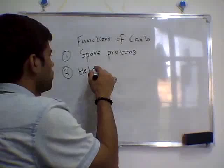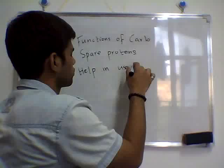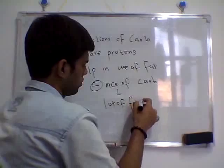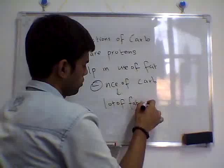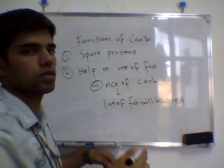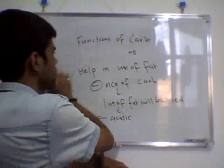Carbohydrates regulate the use of fat. If there is an absence of carbohydrates, a lot of fat will be used, and the body will become acidic, which will result in a condition known as ketosis. So for the proper use of fat, we need carbohydrates.